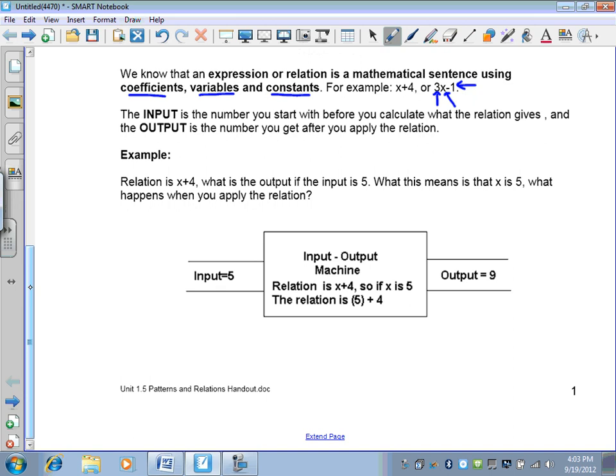For example, this relation is x+4. What's the output if the input is 5? You should have figured out that if the x is a 5 right here, you take the x out and you put the 5 in, and that gives you 5+4. Since 5+4 equals 9, that is your output.